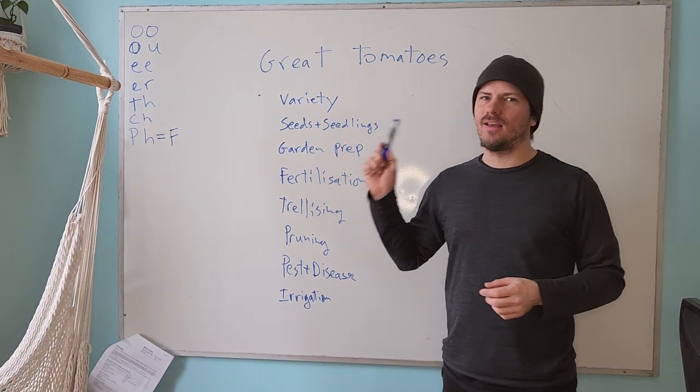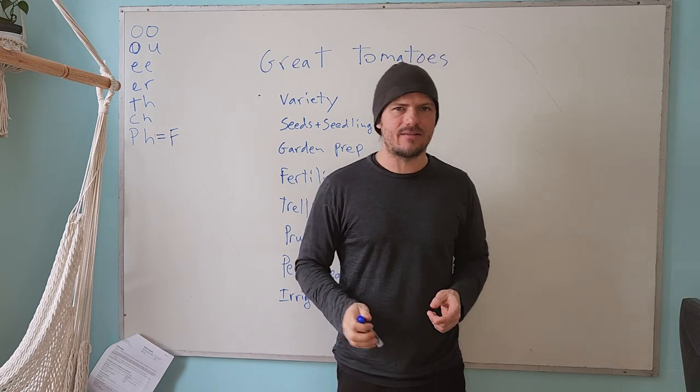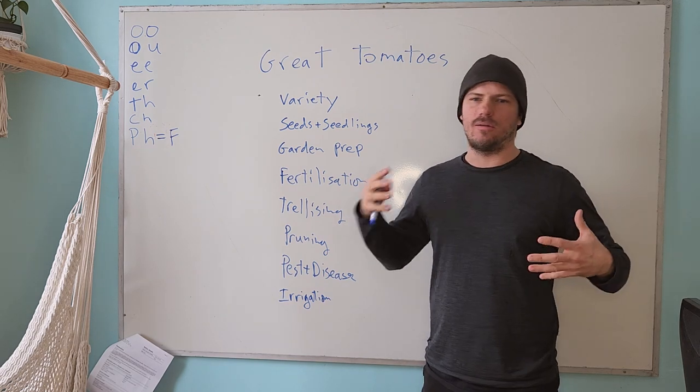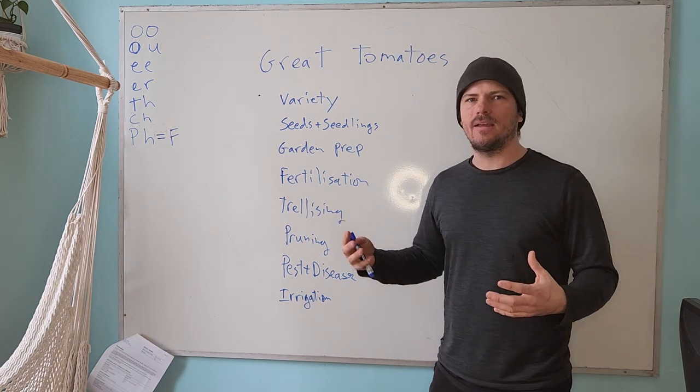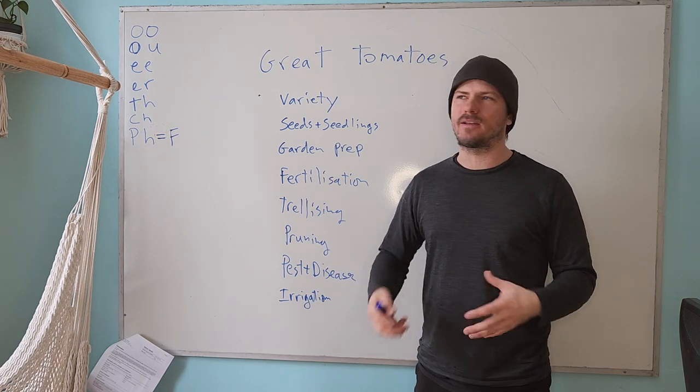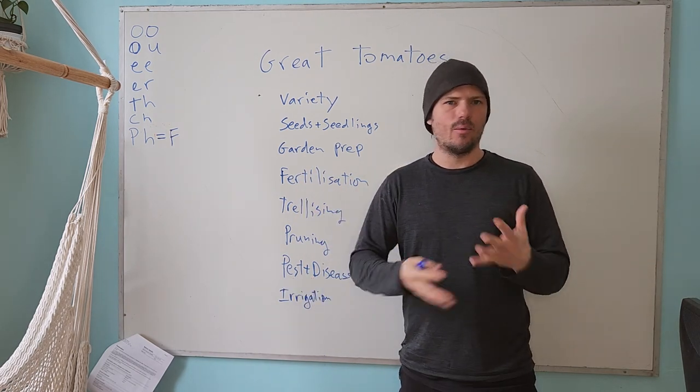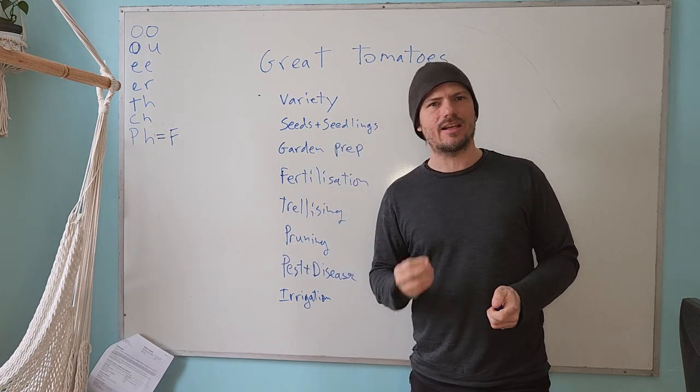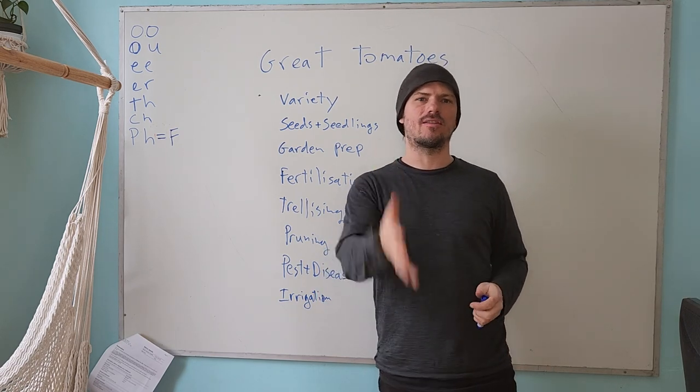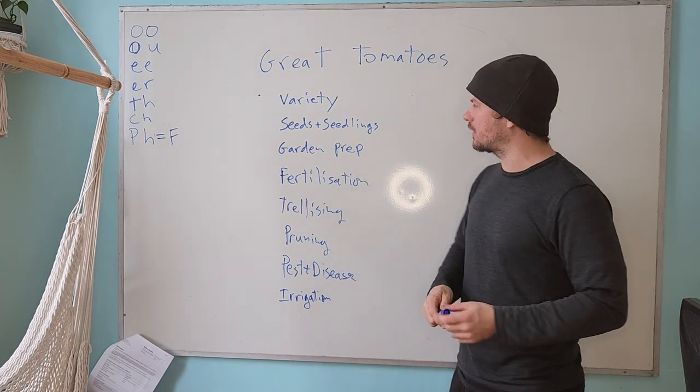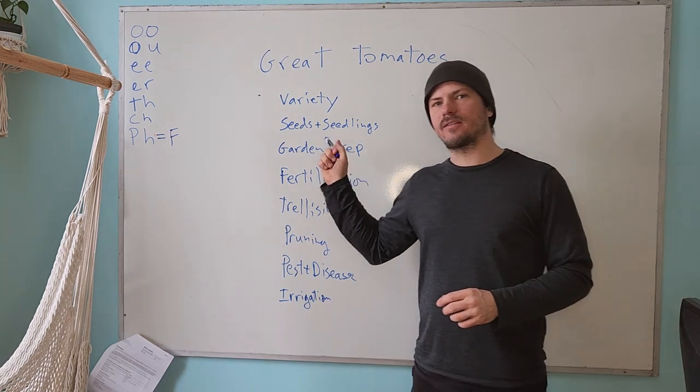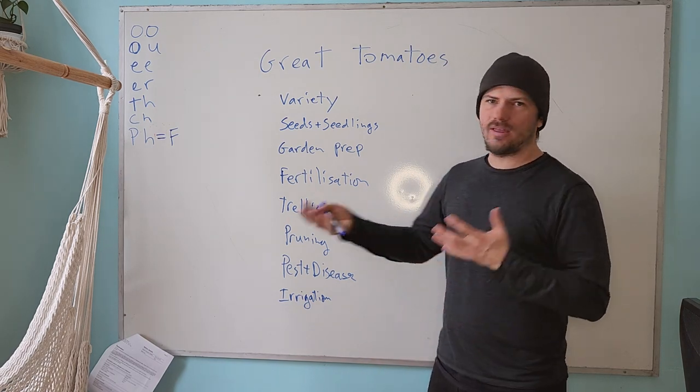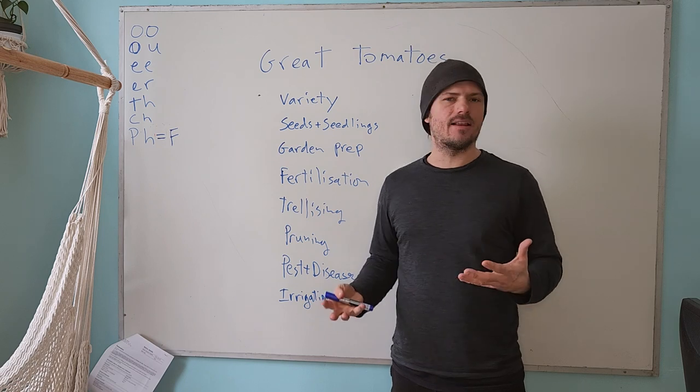So variety selection, then seeds. You definitely want to be getting good quality seeds. You want to be getting seeds from ideally a small or medium sized company, the seeds that have been grown in our area because not only is the variety going to determine what kind of tomato you get, but seeds of a variety that are grown in our climate using organic production techniques are going to be better adapted to the type of conditions that they're likely to find in your home garden.